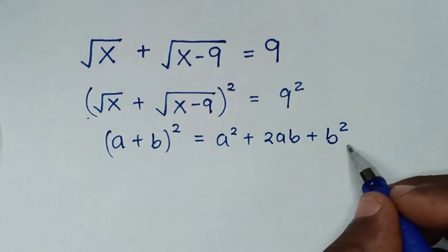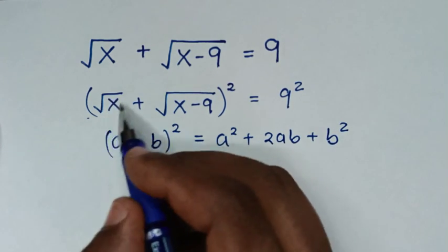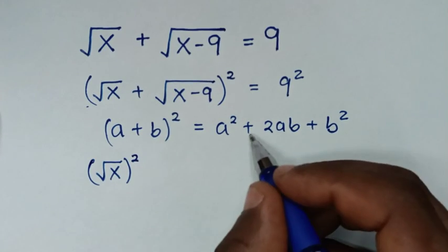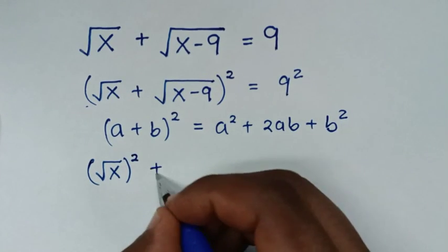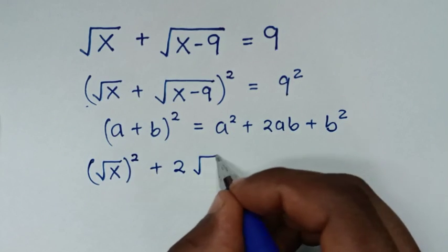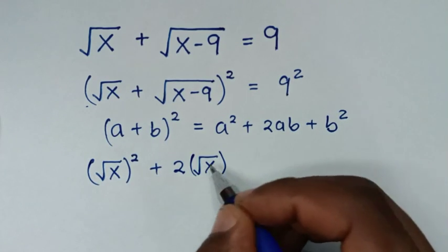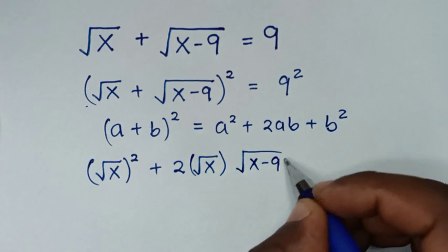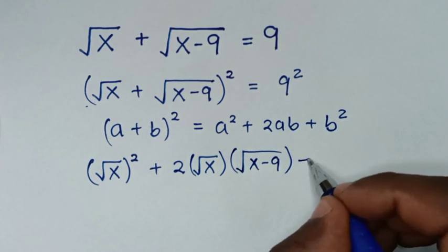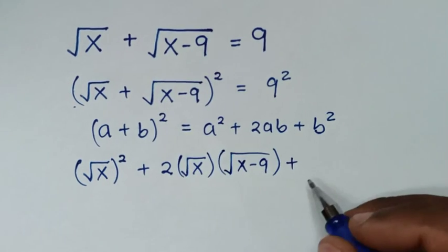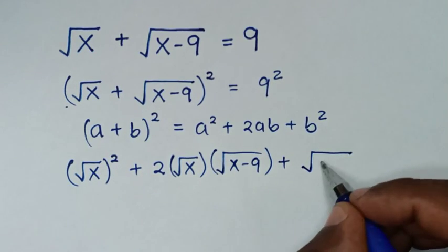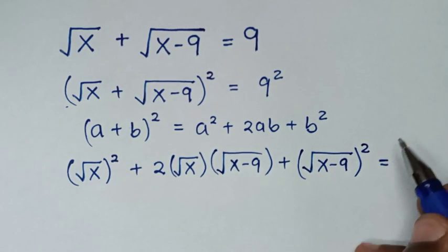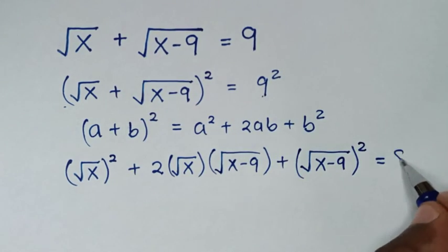We'll apply this form: a² will be (√x)², then plus 2ab, which is 2 times √x times √(x−9), then plus b² which is (√(x−9))², and all of this is equal to 9 squared, which is 81.